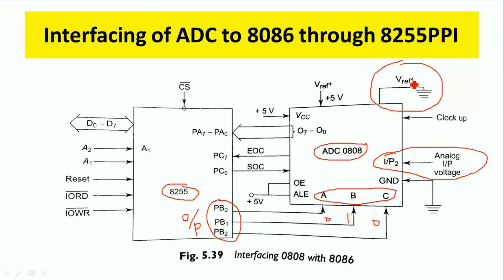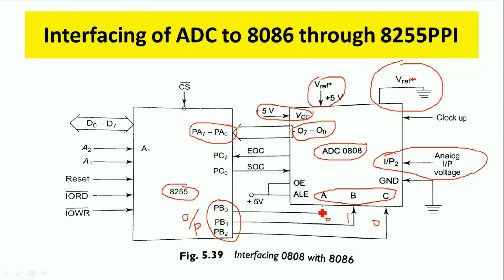V reference minus is grounded and V reference plus is given to plus 5 volts. VCC is also plus 5 volts. The digital data available at output pins 0 to 7 is connected to Port A of 8255, so Port A acts as an input port. Port B acts as an output port. Port C lower is used as an output port for Start of Conversion, and Port C upper acts as an input port for End of Conversion.